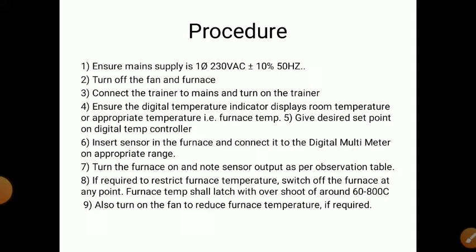If required to restrict furnace temperature, switch off the furnace at any point — the furnace temperature can go up to around 600 to 800 degrees Celsius. So we stop the furnace and take readings. At the end, turn on the fan to reduce the furnace temperature back to room temperature. This is the simple procedure.